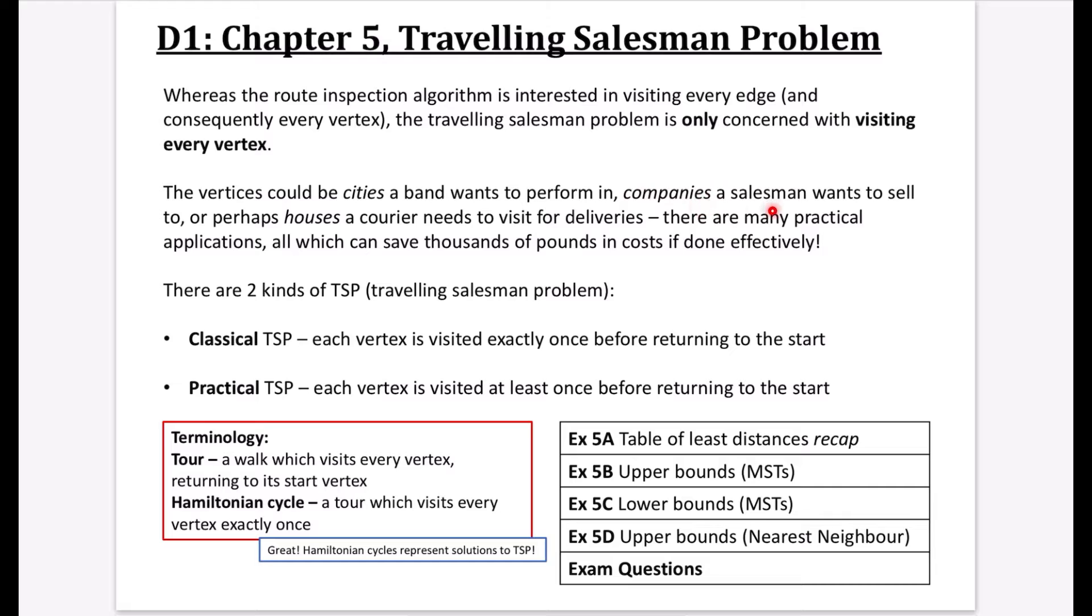The vertices could be cities that a band wants to perform in. So you can see they're more interested in the vertices than they would be in the edges, which would be the roads. It could be companies that a salesman wants to sell to, or perhaps houses a courier needs to visit for deliveries. Sort of delivery networks are a huge reason why people want to be able to solve the traveling salesman problem.